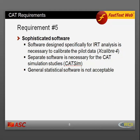Requirement number five is sophisticated analysis software. You need software designed specifically for IRT analysis to perform calibrations on the pilot data — an example is Excalibur IV. You also need separate software for CAT simulation studies for validity evaluation and documentation; an example is CATSIP. Typically, general statistical software is not acceptable and will not perform the necessary analyses.